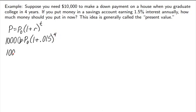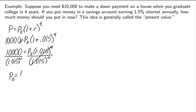So, let's just simplify this a little bit. We have 1.015 to the 4th power. And I could calculate this now, but let me go ahead and divide both sides by this value. And then that leaves us with P0 is equal to 10,000 divided by 1.015 to the 4th power.